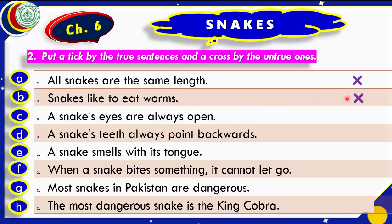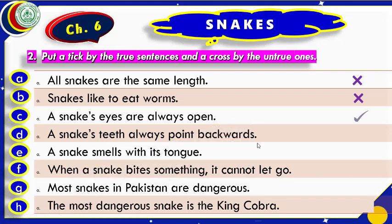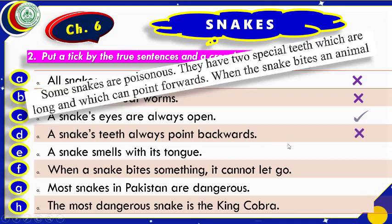'A snake's teeth always point backward.' We have read about teeth which point forward also — special teeth which are long and can point forward, not backward only. That is why we put a cross here.